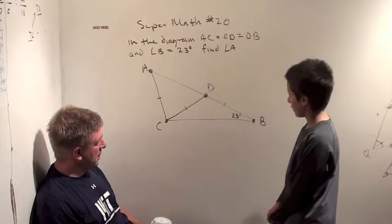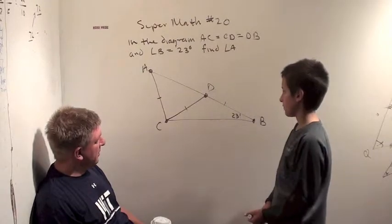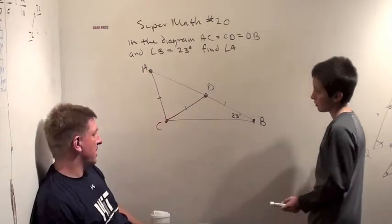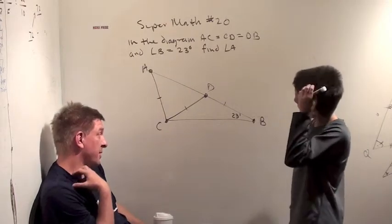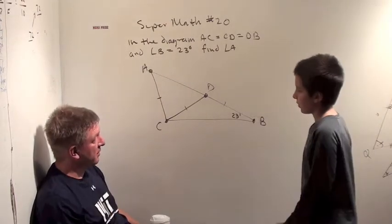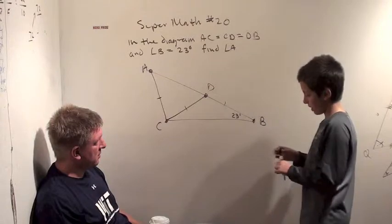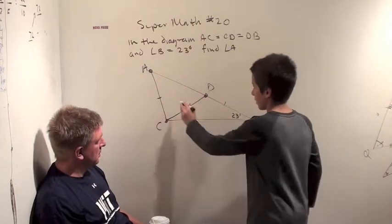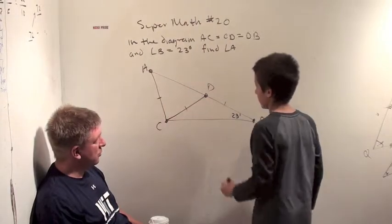We only know one little angle. Yeah, we know these three sides are congruent, or those three line segments, I guess, are congruent, or the same length. Well, we have an isosceles triangle, which we have two. We've got this one, and this one. Ooh, interesting.